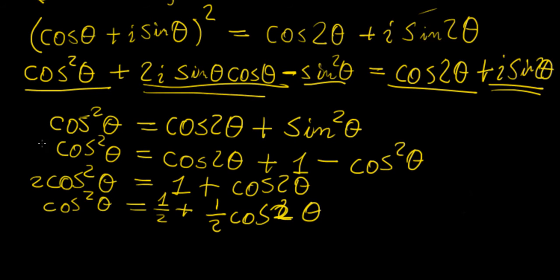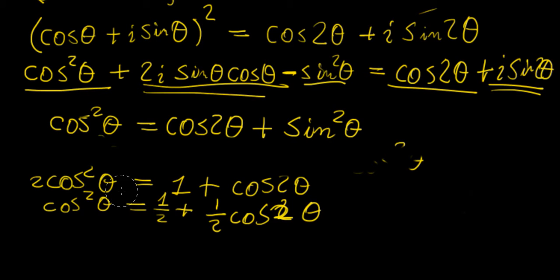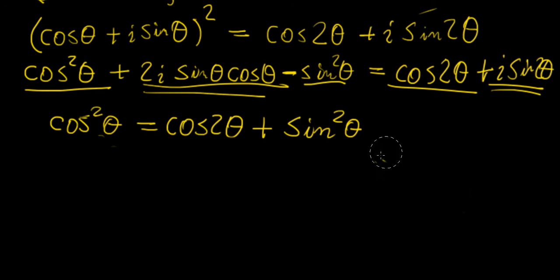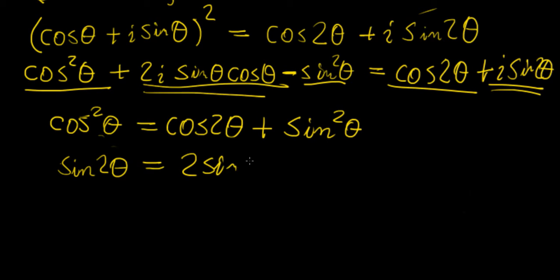From this same expansion we can also get an expression for sine squared theta. You might ask: why not use the imaginary part to extract sine squared theta? Using the imaginary part requires another trigonometric identity. If we equate the imaginary parts, we get sine 2theta equals 2 sine theta cosine theta — which is actually the double angle formula. So from this simple expansion of De Moivre's theorem, we obtained two trigonometric identities: one for cosine squared theta and the double angle formula for sine.